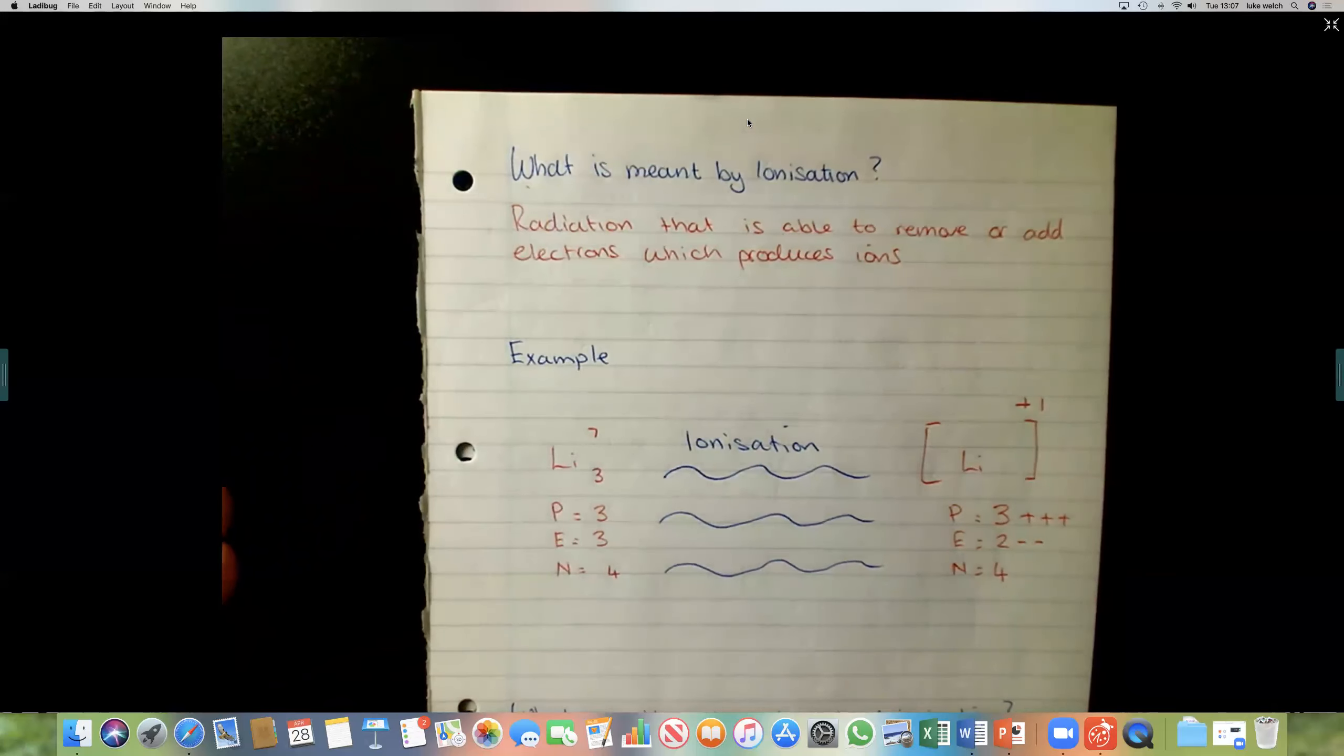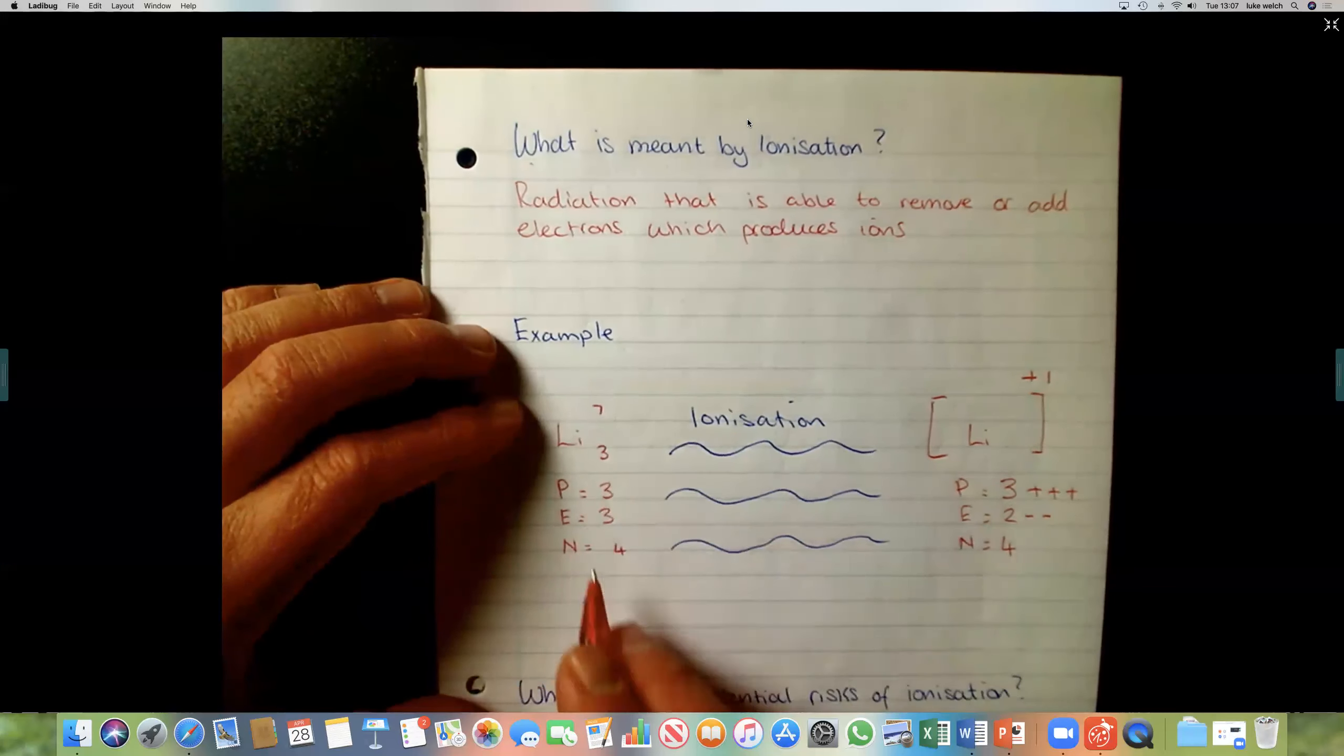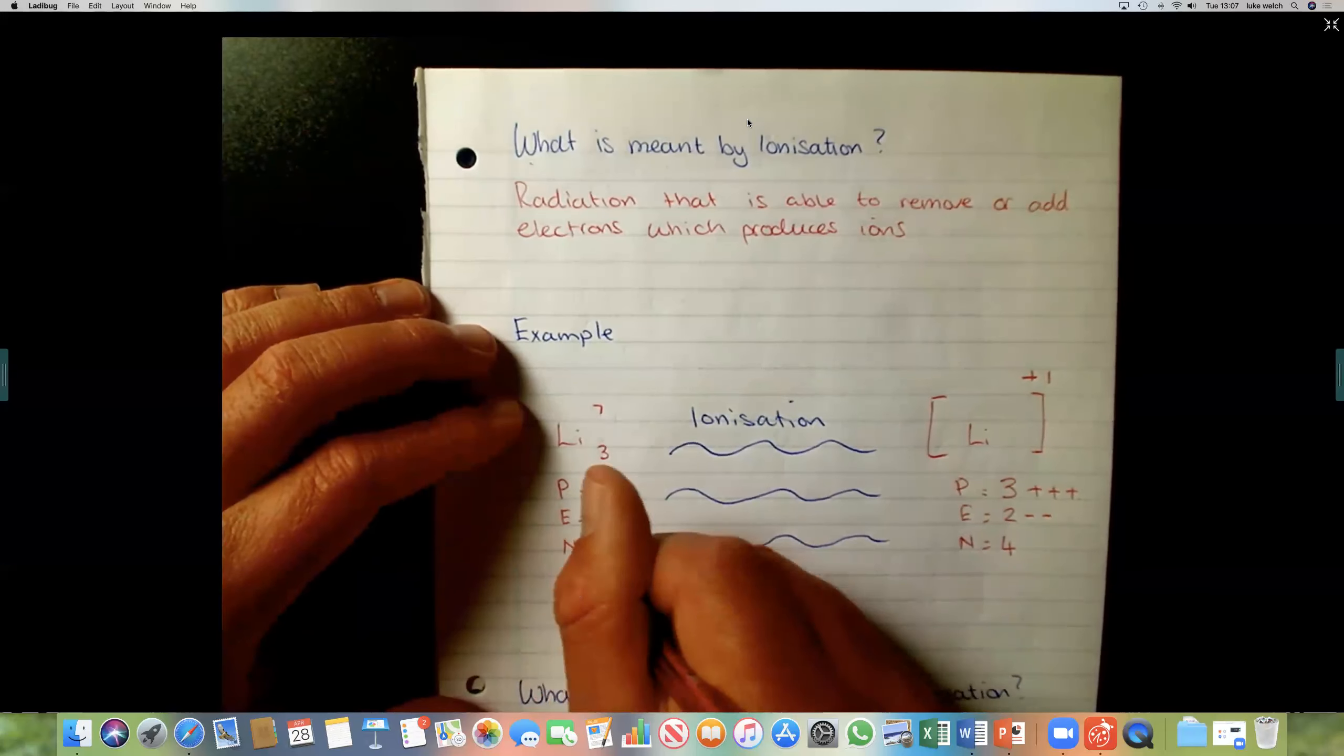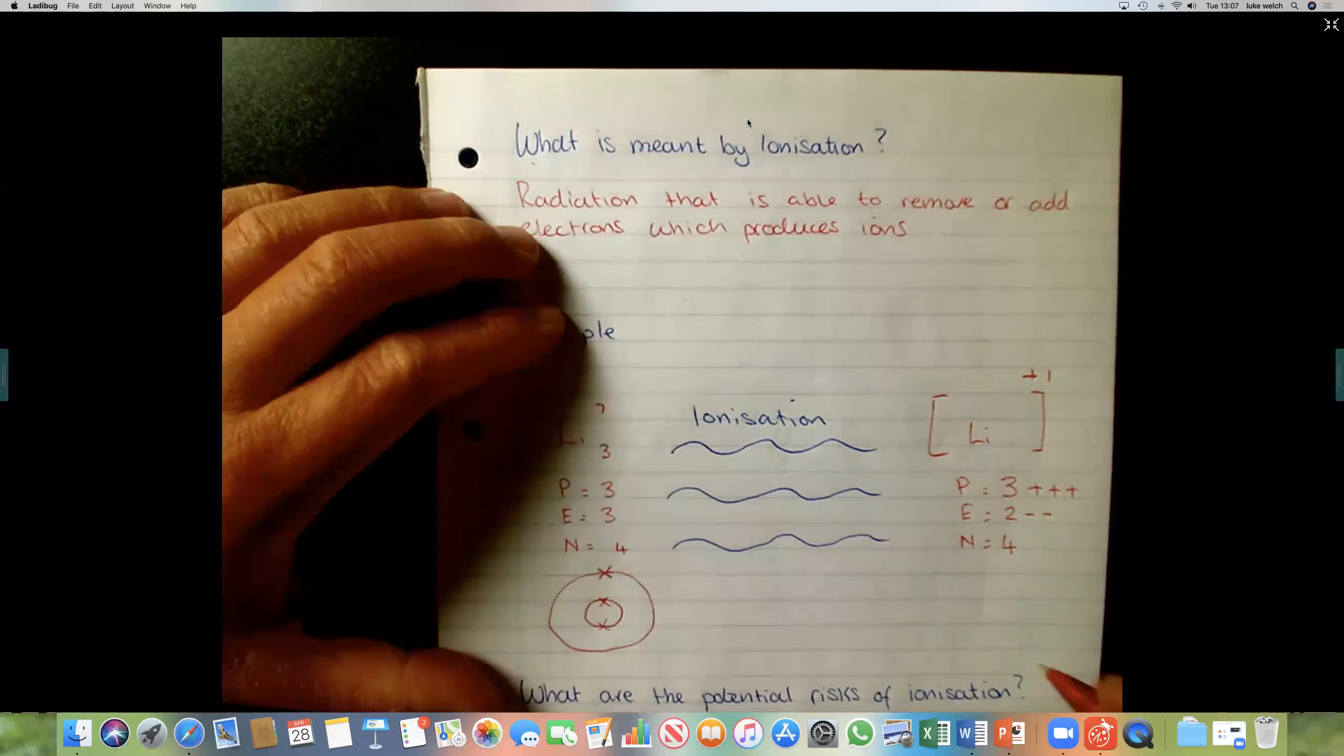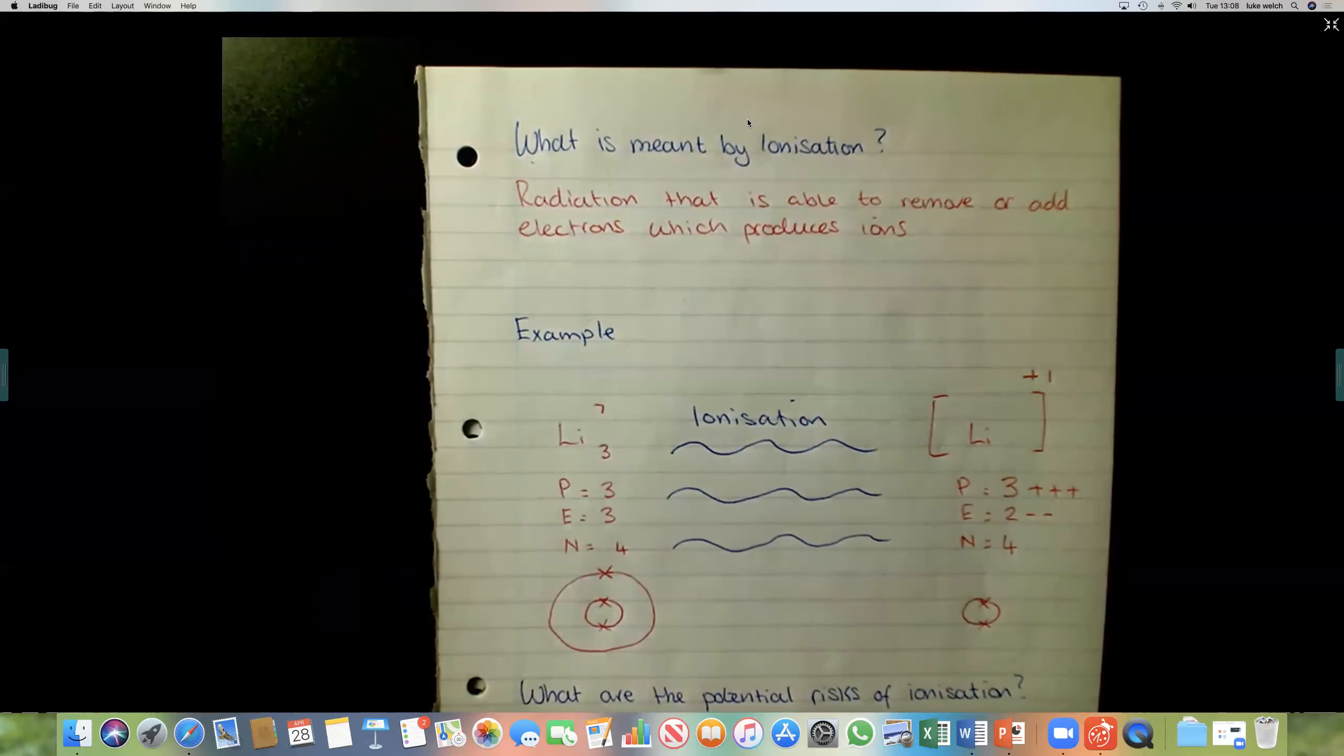Now, I'm going to draw that as a structure. So the electron structure. Remember that the electrons go, first shell holds two, and second shell holds eight. How many electrons have I got this side? I've got two in the first shell. And then one in the second shell. So it hasn't got a full outer shell. This side, all we've got is two. There's now an ion.